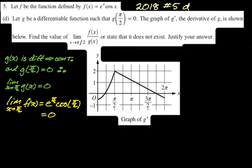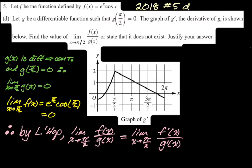Now we have 0 in the numerator and 0 in the denominator, so we're justified in using L'Hopital's rule. Therefore, by L'Hopital's, the limit as x approaches π/2 of F(x)/G(x) equals the limit as x approaches π/2 of F'(x)/G'(x). You want to link those ideas together clearly.